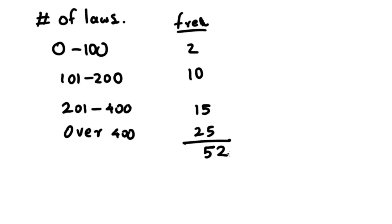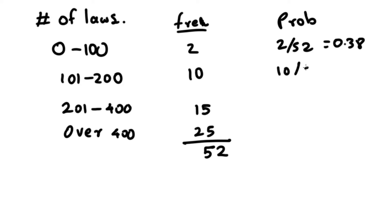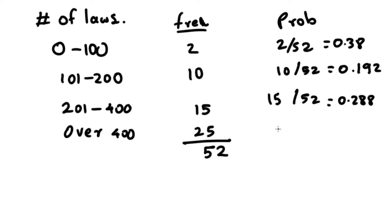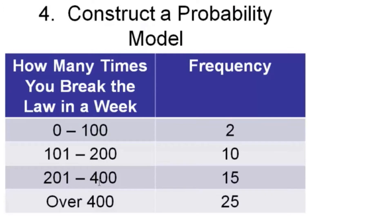The probability for each range is frequency divided by the total of 52. So: 2 divided by 52 equals 0.038; 10 divided by 52 equals 0.192; 15 divided by 52 equals 0.288; and 25 divided by 52 equals 0.481. That is the probability model for this question.